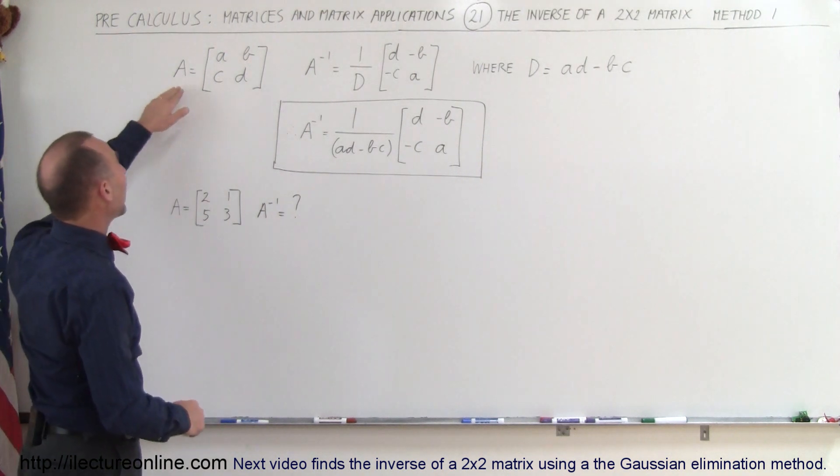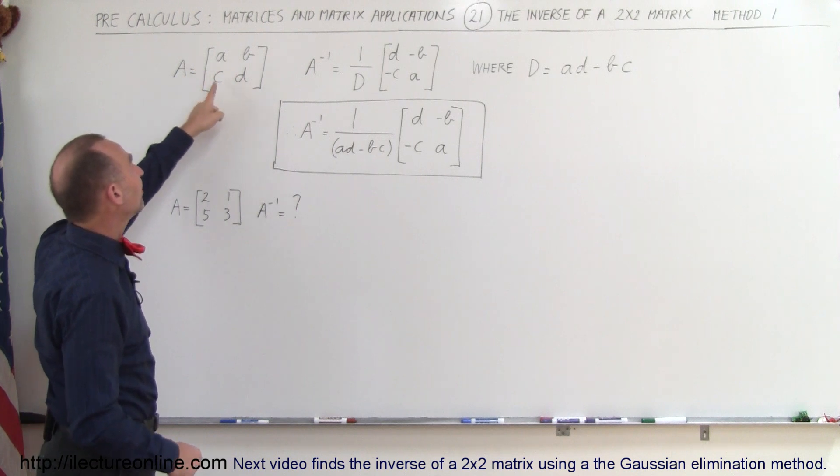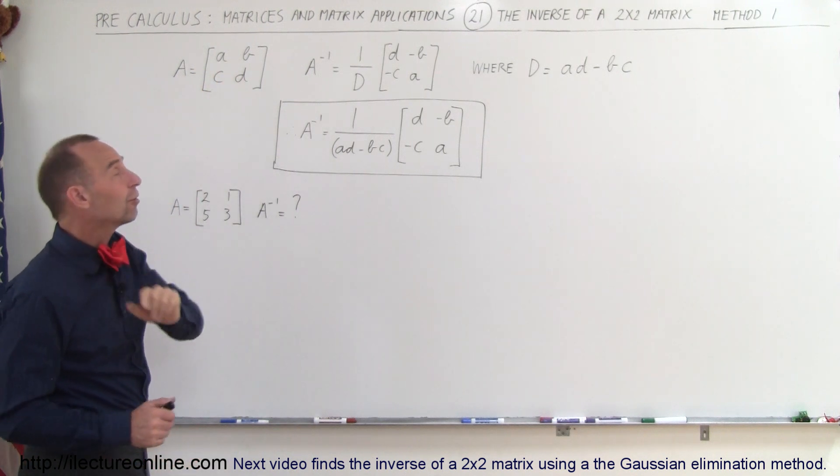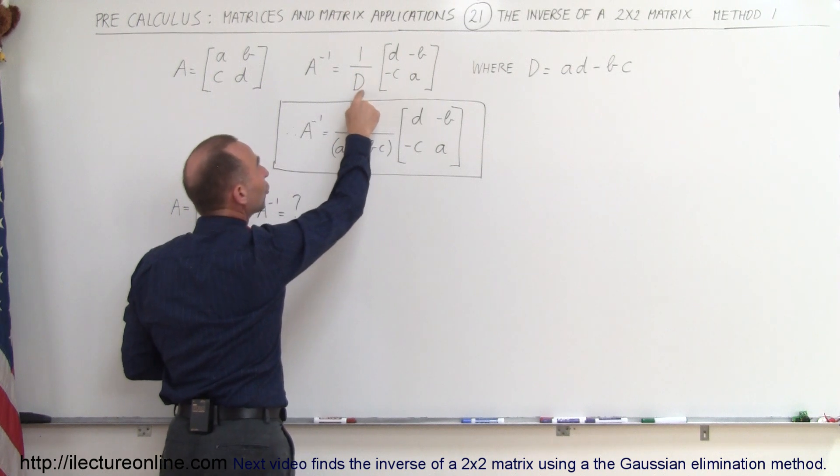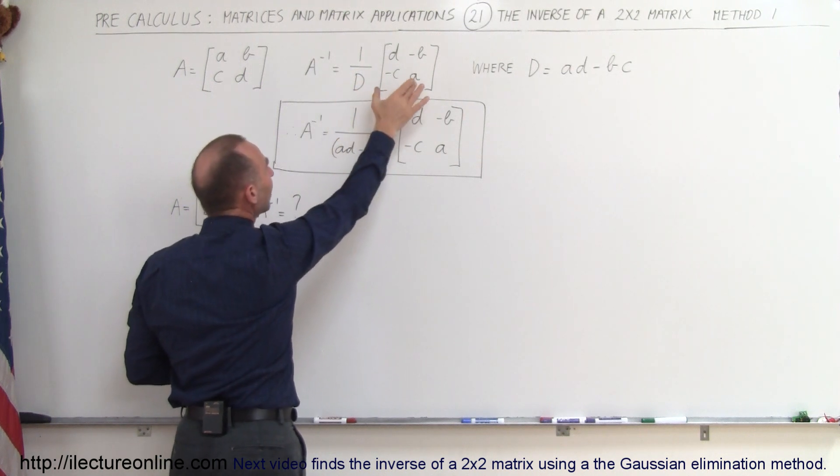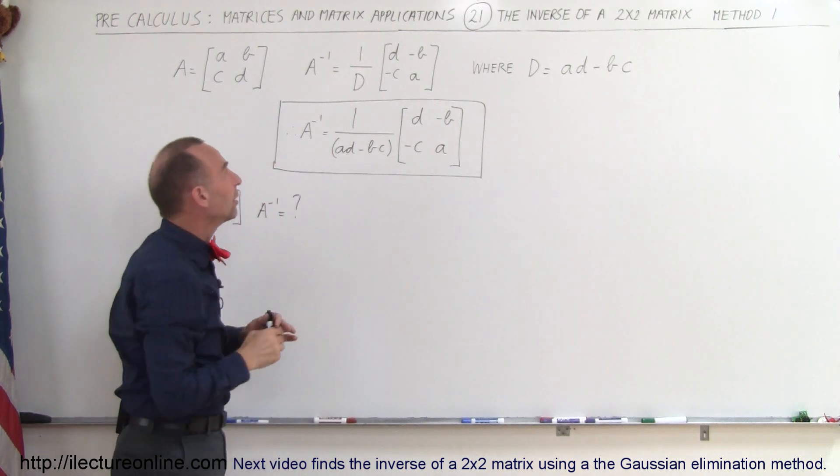So let's say we have a matrix A, which has the elements a, b, c, and d. Then the inverse of the matrix is equal to 1 over D, that D is the determinant, and we'll show you in a moment what that is, times the elements, and the elements have changed a little bit.